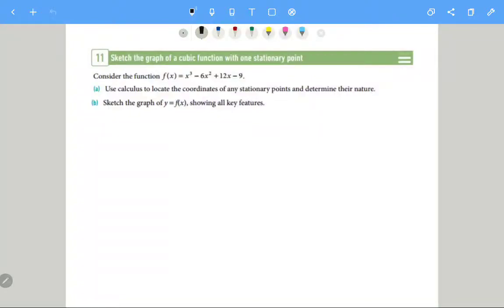Let's have a look at sketching a slightly different cubic, and this cubic is only going to have one stationary point. So consider the function f(x) equals x³ minus 6x² plus 12x minus 9. Use calculus to locate the coordinates of any stationary points and determine their nature.